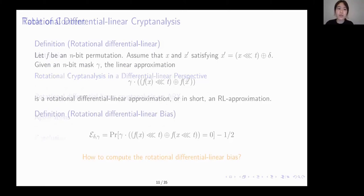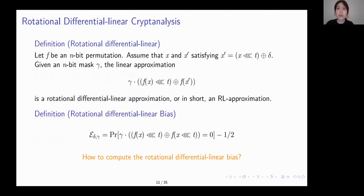So we proposed rotational differential linear cryptanalysis, where given a pair of rotationally related inputs x and x prime, we studied the linear approximation with mask gamma on their output difference through the cipher, as this formula shows here. And accordingly, we defined the bias of such distinguisher by the probability minus half. Now we can see that rotational differential linear is a generalization of differential linear, because when the rotational amount is zero, the distinguisher becomes a differential linear. We will come back to this observation later.